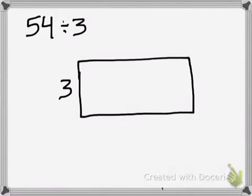With distributive property, I have to split up my dividend. So 54, I know I can split up into 30 and 24 because both of those numbers not only add up to 54, but I know both of them can be divided by 3.